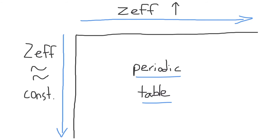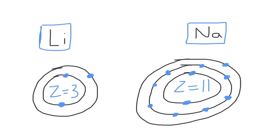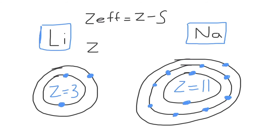Let's talk about why the effective nuclear charge remains approximately the same as you move down a group. Writing out the equation again — Z effective equals Z minus S — as we move from lithium to sodium in group one, the nuclear charge increases, just like when moving across a period. For lithium, Z equals 3, and in sodium, Z equals 11.